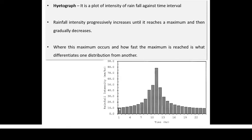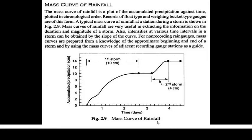As you can see here, in the first hour the rainfall was around 10 mm, in the second hour it was more than 10 mm, and so on. At around hour 11, the rainfall is around 80 mm. This is the hydrograph — it shows how rainfall intensity varies with time.